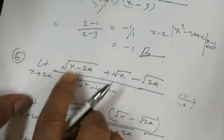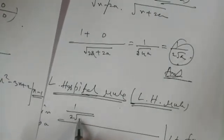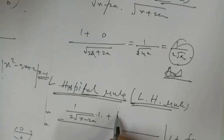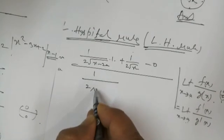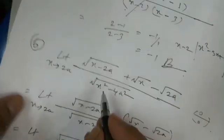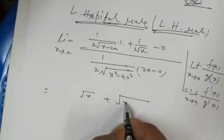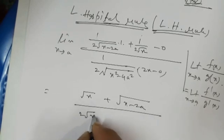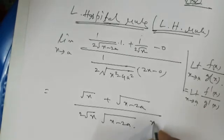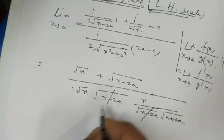Applying L'Hôpital's rule to question 6: since it is 0/0 form, take the derivative of the numerator: derivative of √(x - 2a) is 1/(2√(x - 2a)), derivative of (x - 2a) by chain rule is 1, derivative of √x is 1/(2√x), and derivative of √(2a) is 0. Derivative of denominator √(x² - 4a²) gives x/√(x² - 4a²).